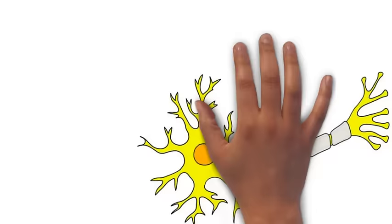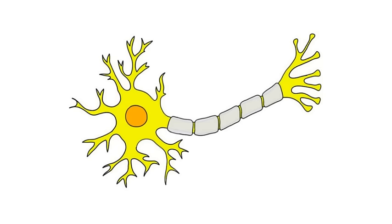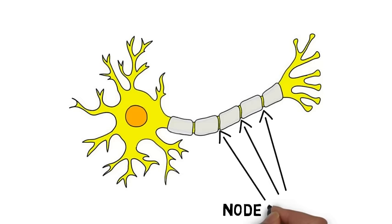Myelin does not cover an axon fully. Instead, there are intermittent gaps in the myelin where the axon is exposed to extracellular space. These gaps are called nodes of Ranvier, and the sections of myelin that are adjacent to the nodes of Ranvier are called internodes.